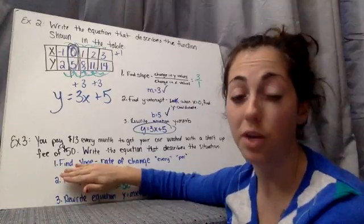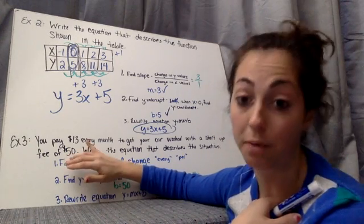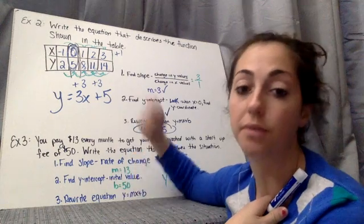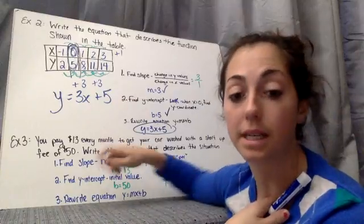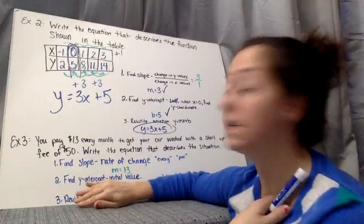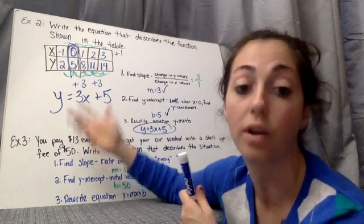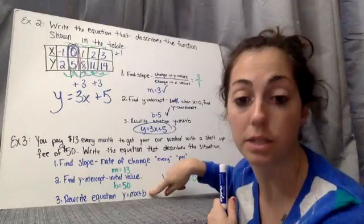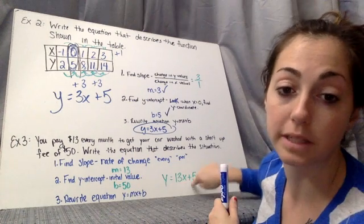Y equals mx plus b is our equation. What do we need to find? Our slope, our rate of change. You want to look for words like every and per. So where do we have that? Well, I pay 13 or you pay 13 every month. So there's my rate of change. It's 13 every month. So my m is that 13. And the next thing is our y intercept. That's your initial value. You have a startup fee of $50. That's a starting value. That's an initial value. So my b value is 50. So the last thing to do is rewrite the equation as y equals mx plus b. Plugging in 13 for my m, 50 for my b. And again, y equals 13x plus 50.